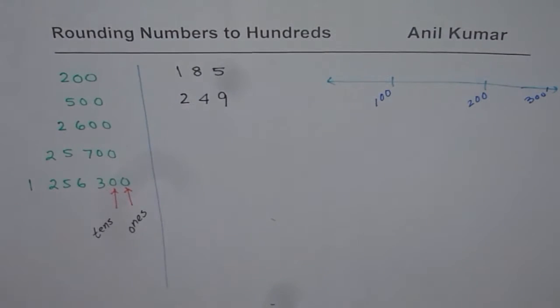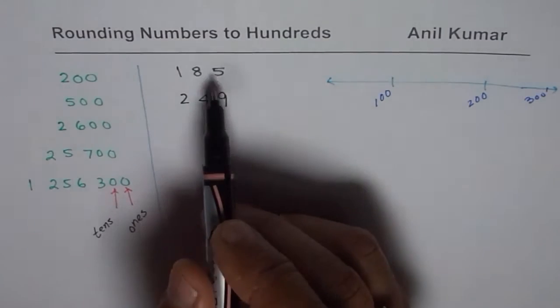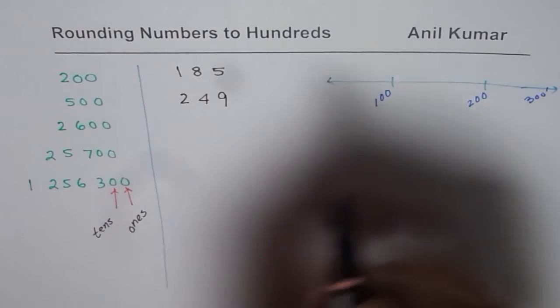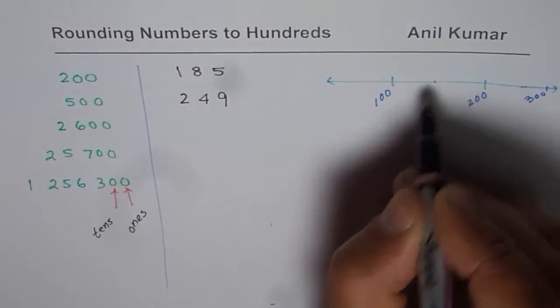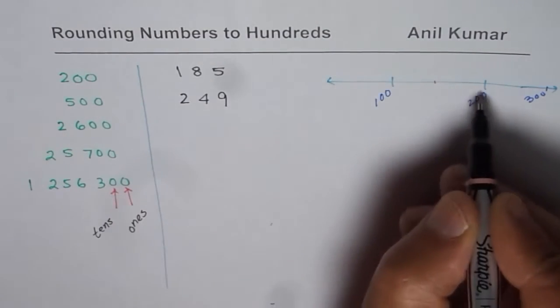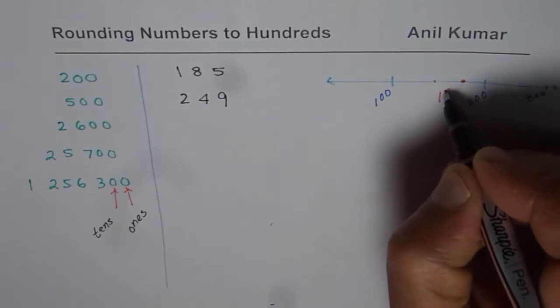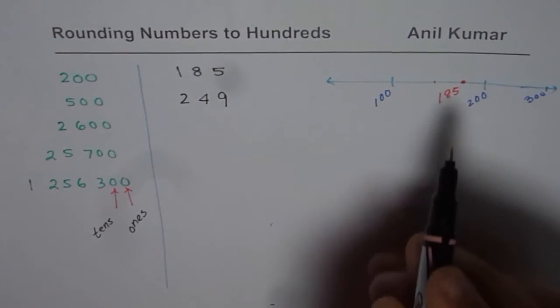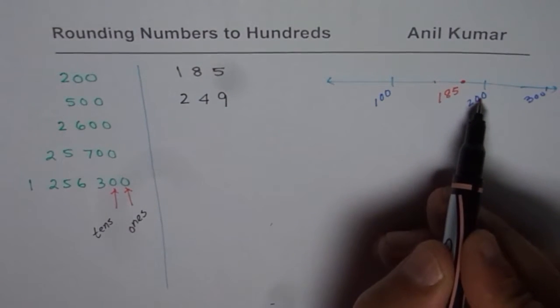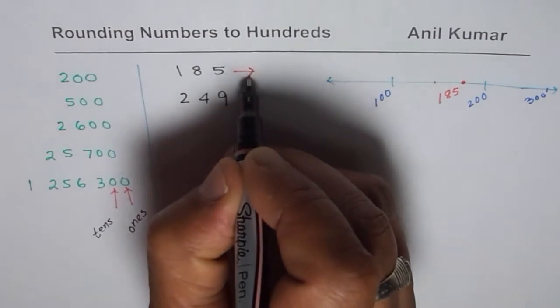Now, in this particular case, 185 will be where? 100, 150 is in the center. 185 will be closer to 200. Let's say this number is 185. Now since this number is closer to 200, we round it to 200.